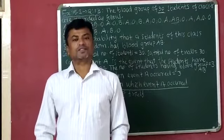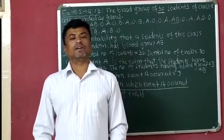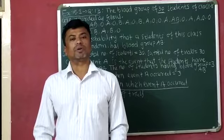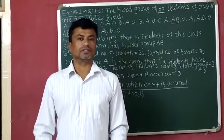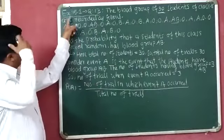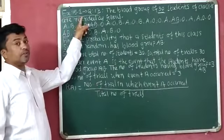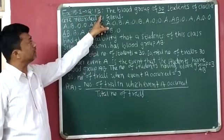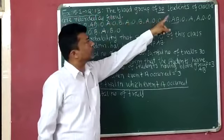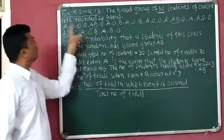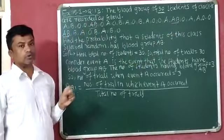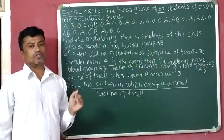Good morning students. Today we will discuss Exercise 15.1, question number 13. The blood group of 30 students of class A are recorded as follows.